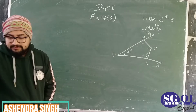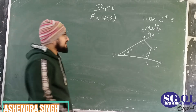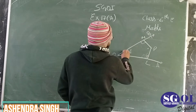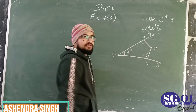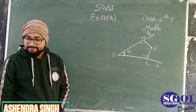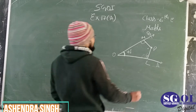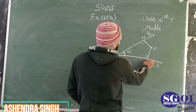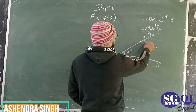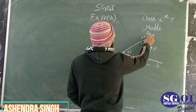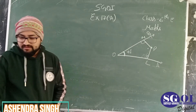It is saying that P is a point in the interior of angle A.O.B. If P.L is perpendicular to O.A, and P.M is perpendicular to O.B, that means the angles here are 90 degrees.